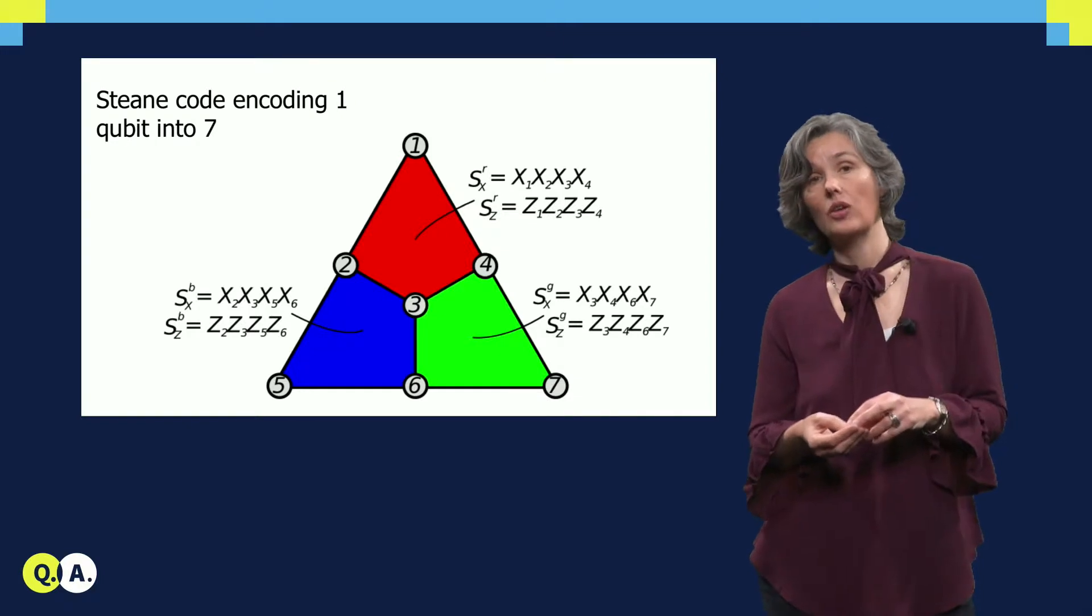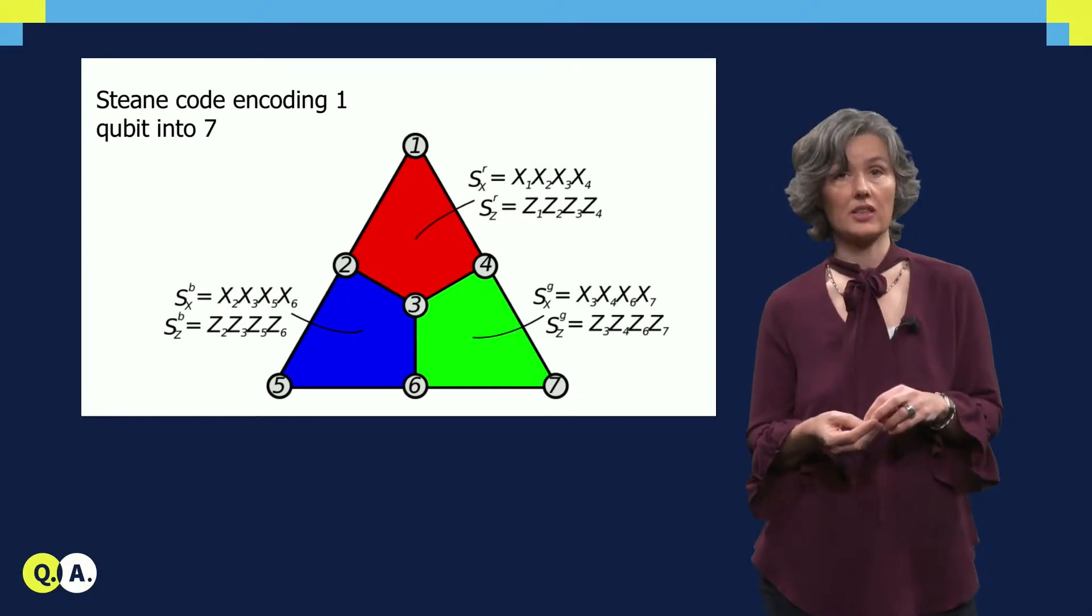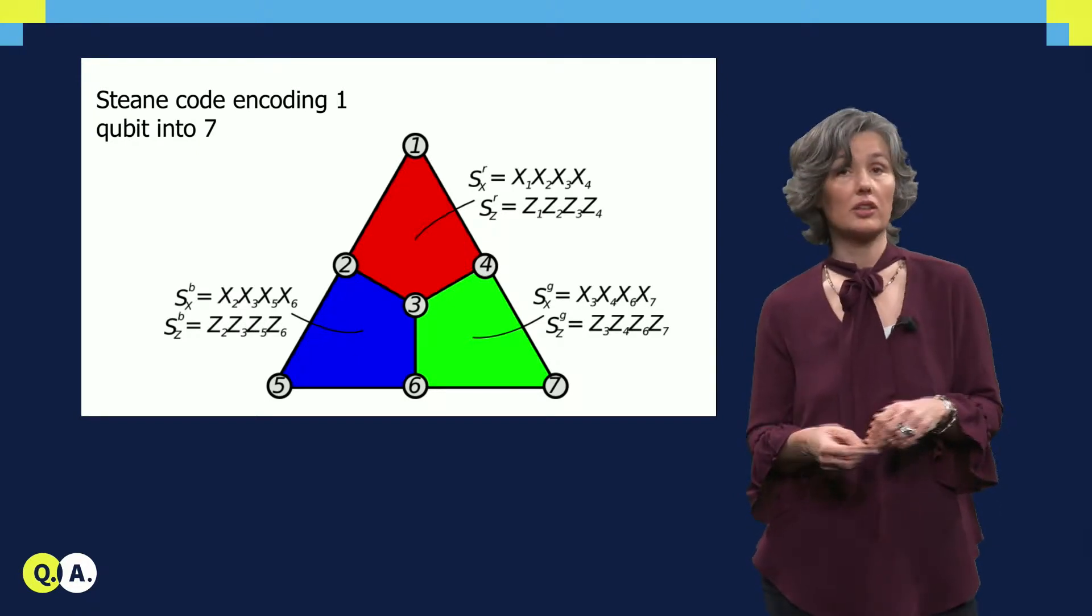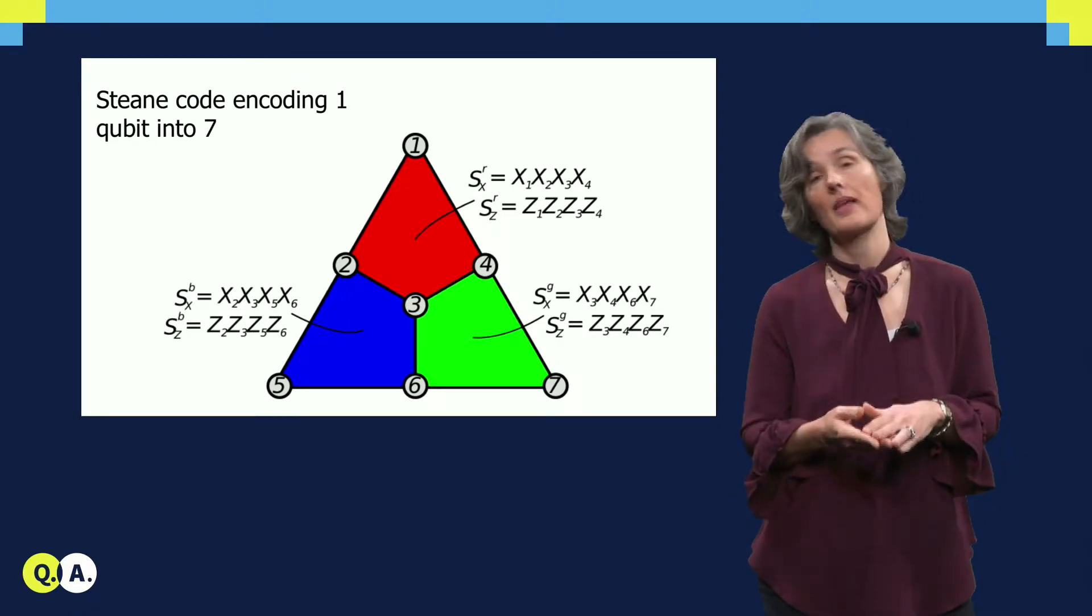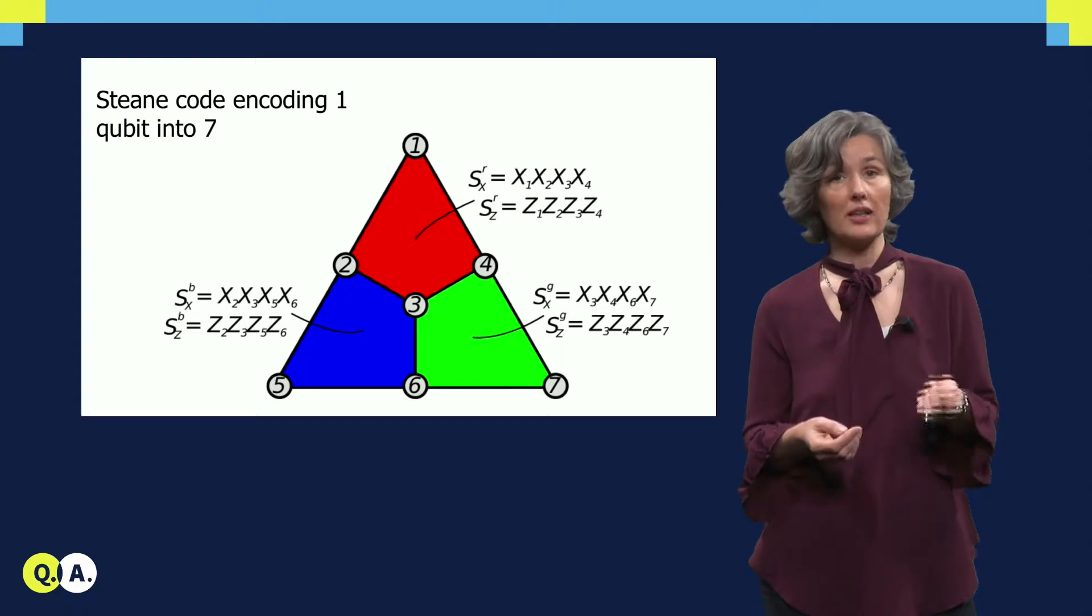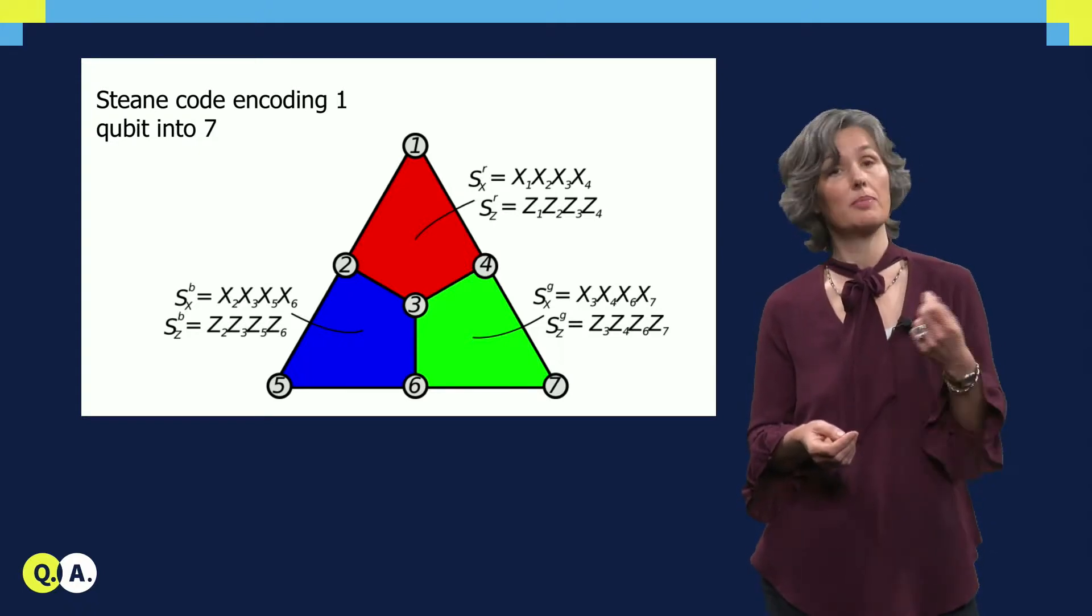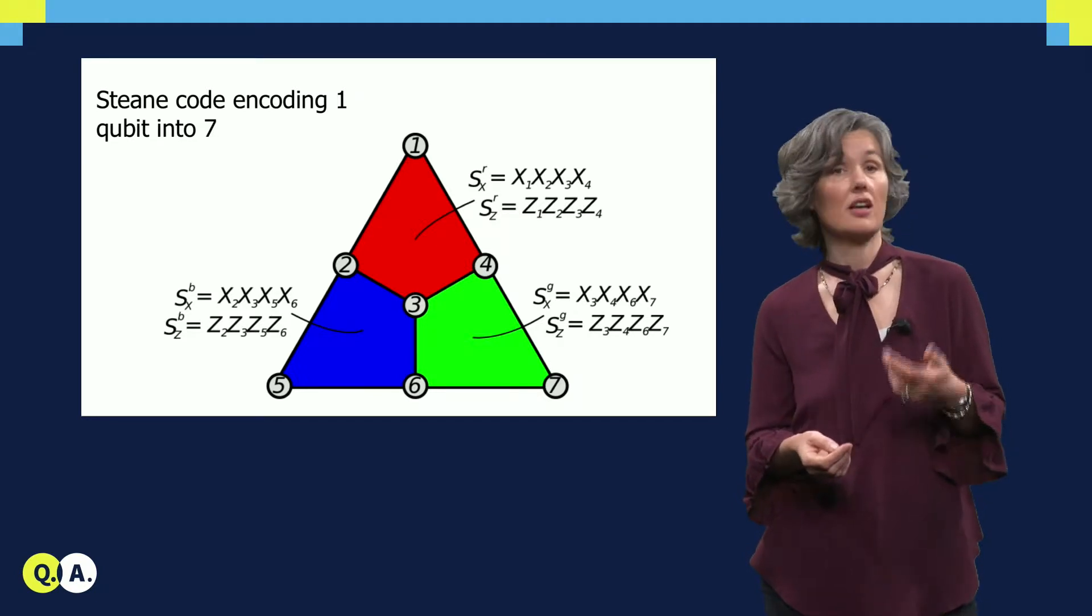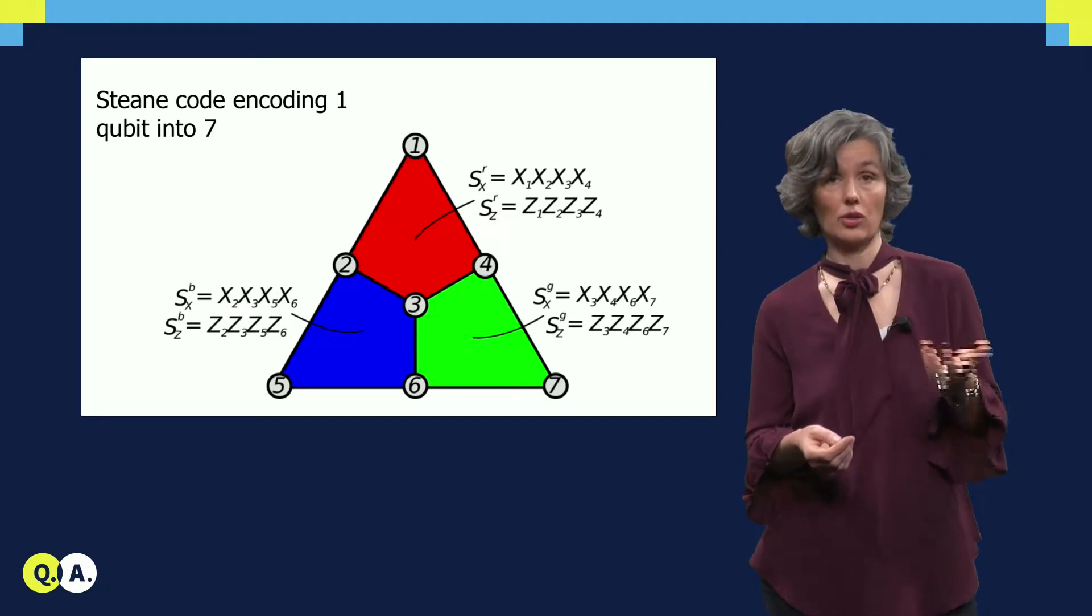For the Steane code that we've seen, there are parity checks on three subsets of qubits. These subsets are colored red, green and blue. For each subset, there is a parity check for detecting and correcting x errors, and there is a parity check for detecting and correcting z errors. Hence there are six checks to be measured in total.